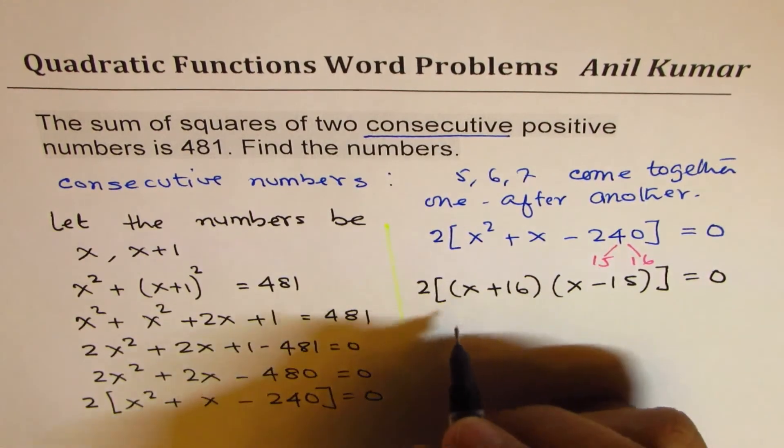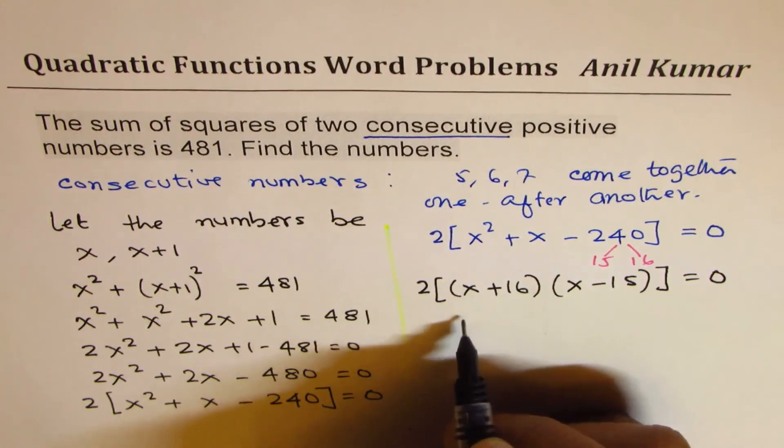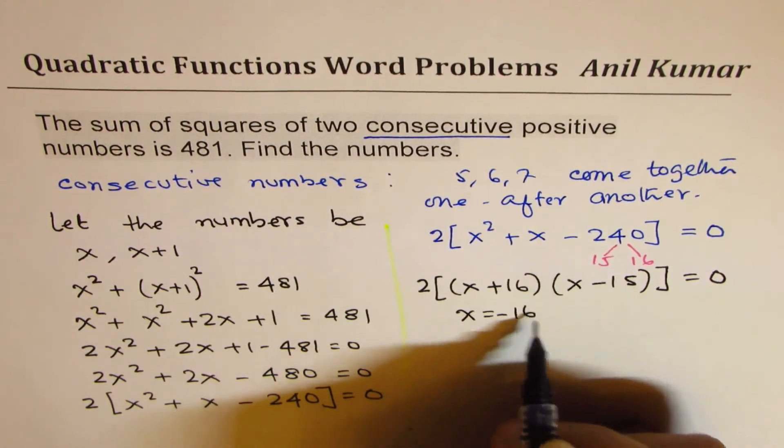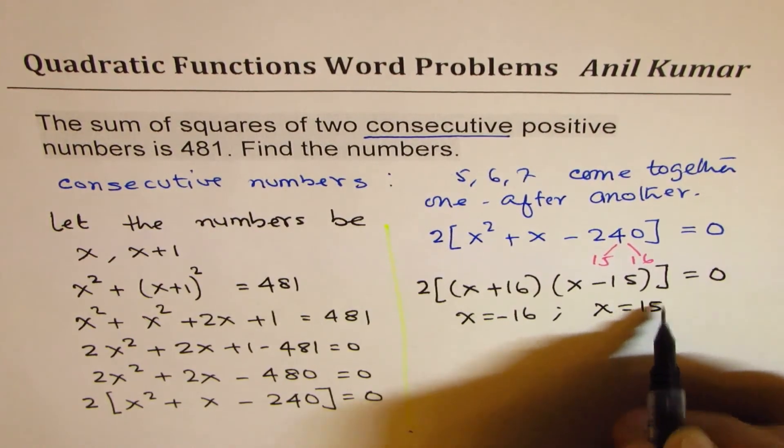Now that gives us two solutions. For that to be 0, 2 cannot be 0, but x plus 16 can be 0 if x equals minus 16, and x minus 15 can be 0 if x equals plus 15.